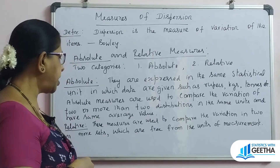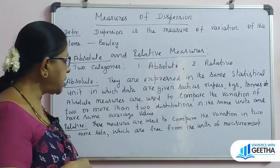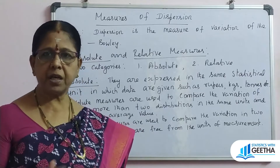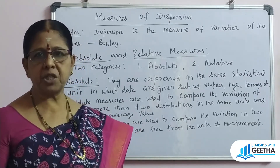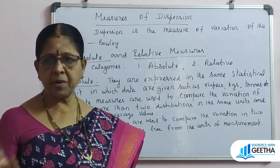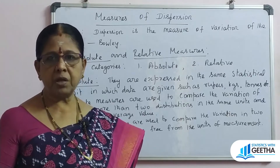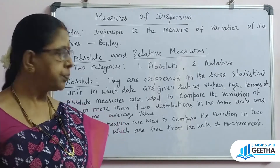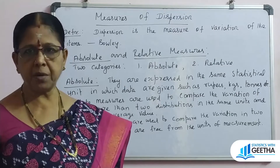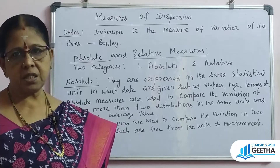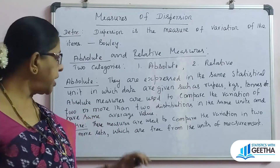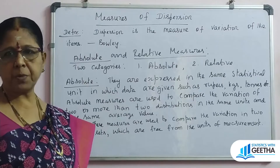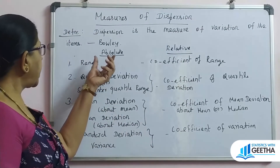Relative measures are used to compare the variation in two or more sets or distributions, and they are free from the unit of measurement. If you compare two distributions, you can do so without any issue regarding the unit of measurement. You can compare and determine which is more variable, less variable, more consistent. That is why we use the relative measure — it gives us maximum comparability.